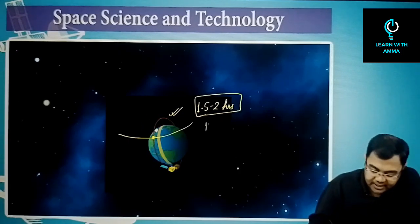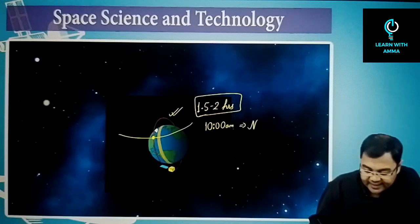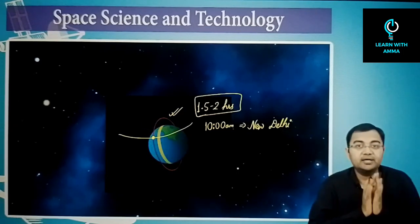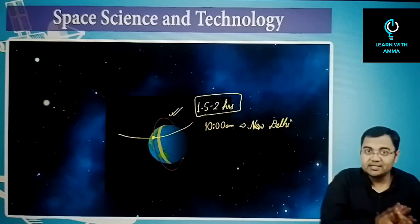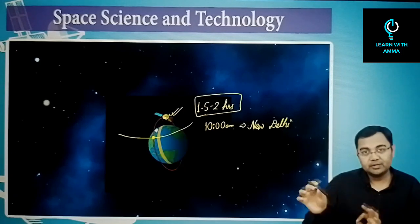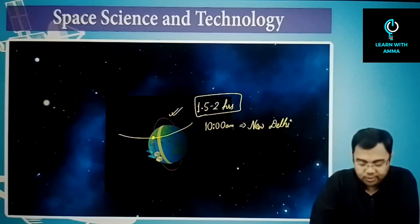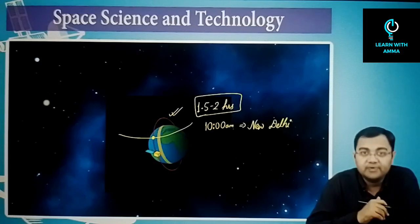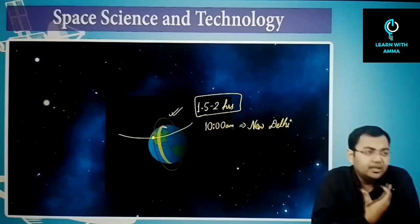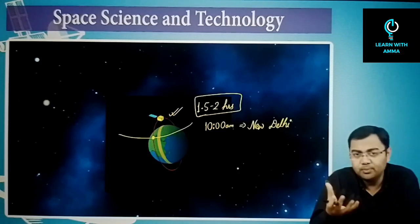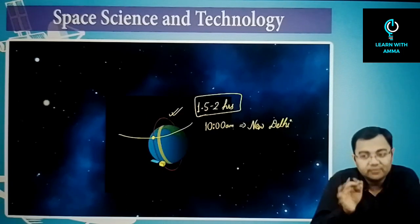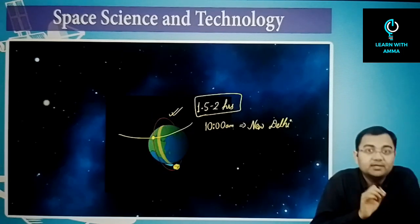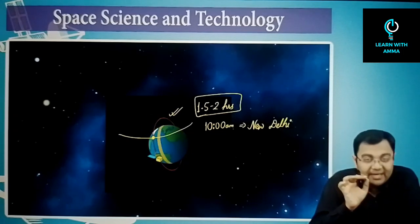For example, if we need 10 am observations in New Delhi, the orbit is synced so the satellite passes over New Delhi at 10 am local time every day — or at sunrise every day, irrespective of standard time. This is what makes it sun-synchronous.